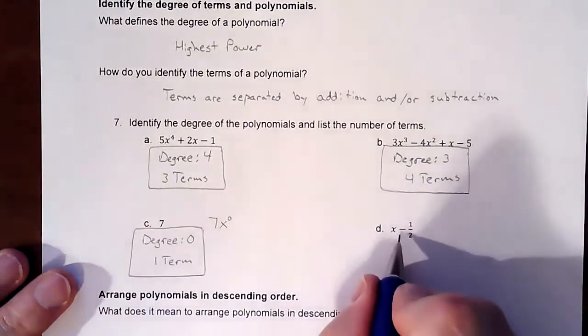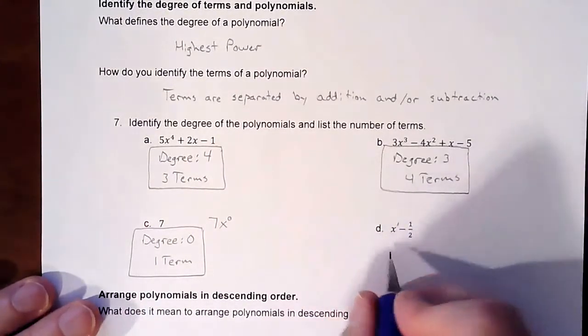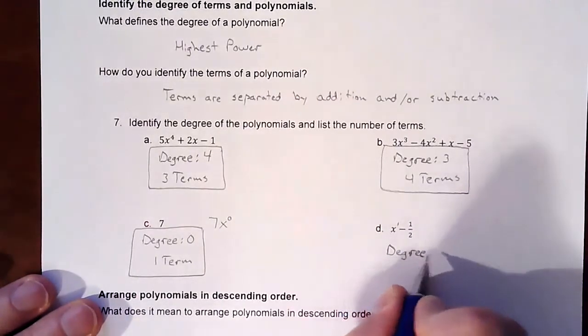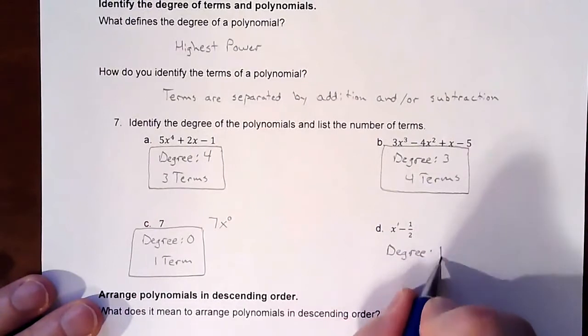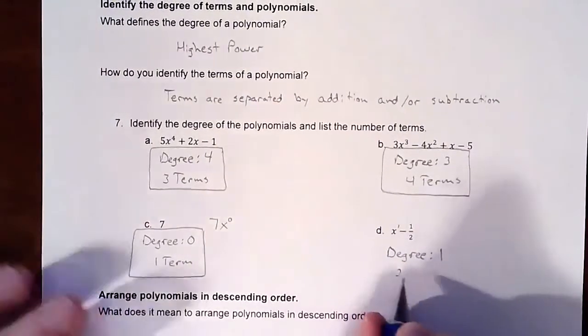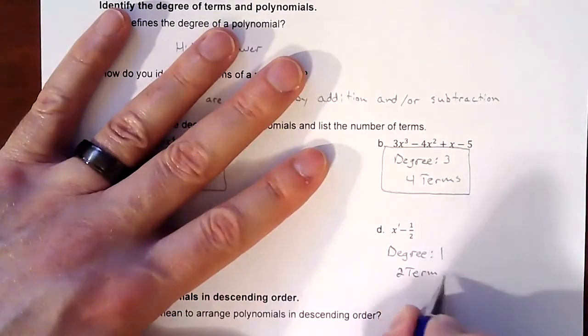All right, and then here the one half doesn't play any role. This x has a power of one on it, so the degree is one and it is two terms, which would be called a binomial.